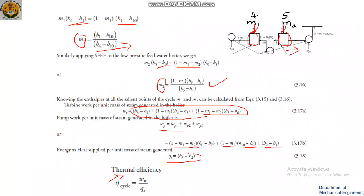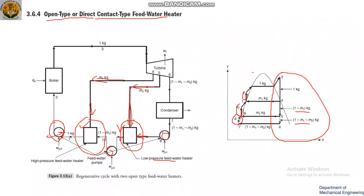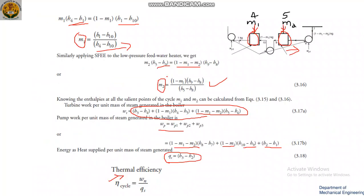Heat supply QS is only through the boiler portion: QS equals H3 minus H2. The thermal efficiency is Wn divided by QS, where Wn equals Wt minus Wp. Substituting both equations gives us the thermal efficiency of the open type feed water heater.